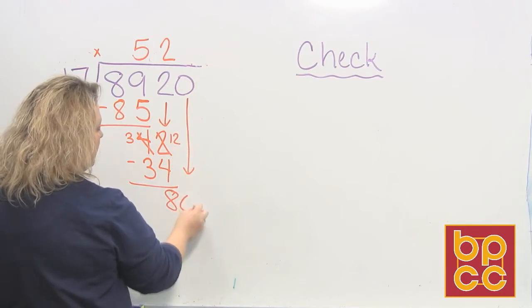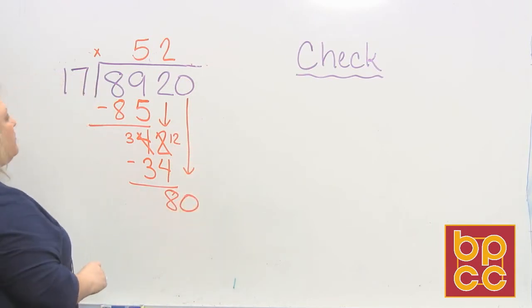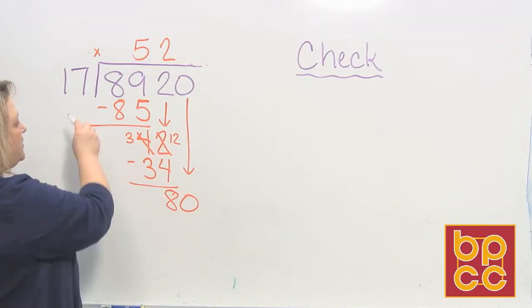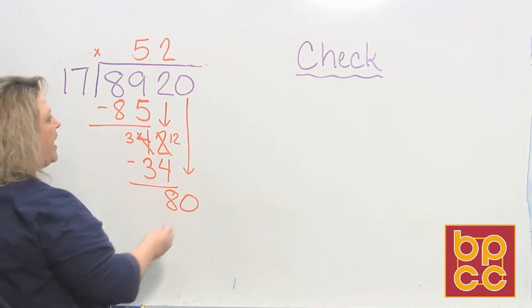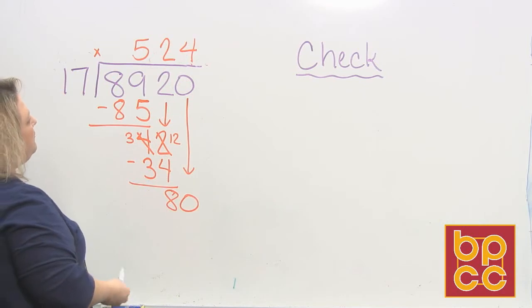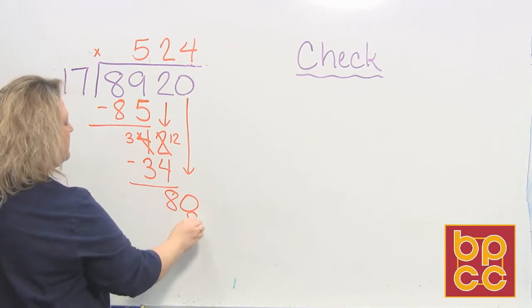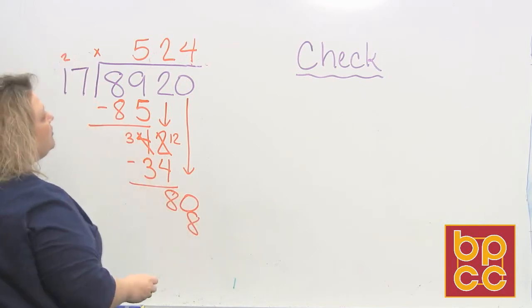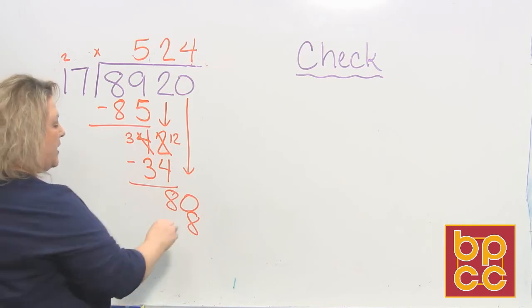I bring down my last digit, and that's a 0. So then I'm going to divide one last time. 17 goes into 80 about 4 times. So when I do that multiplication, 4 times 7 is 28. 4 times 1 is 4, plus 2 makes 6.